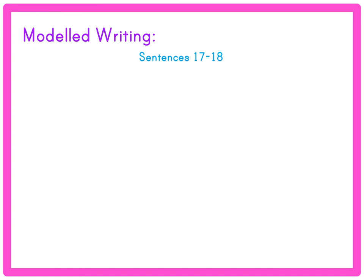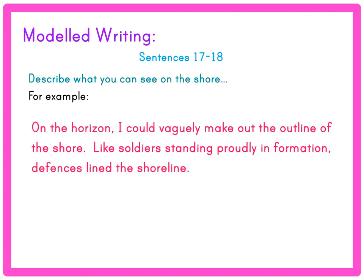Sentences 17 to 18: Describe what you can see on the shore. For example: 'On the horizon I could vaguely make out the line of the shore. Like soldiers standing proudly in formation, defences lined the shoreline.'